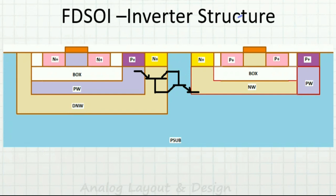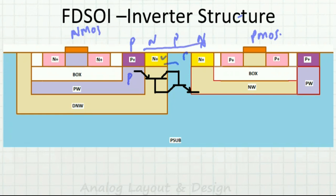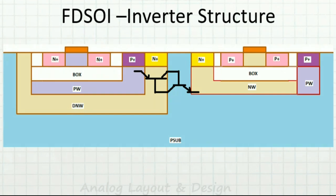Now let's look at the structure of an FDSOI inverter. This is the NMOS and this is the PMOS. There is a P-well (P region), then an N region, then another P region and N region — so a P-N-P-N structure exists. Similar to bulk CMOS, I can identify a PNP transistor and an NPN transistor. The P-well, deep N-well, and P-substrate form the PNP, while the NPN is formed by the deep N-well, substrate, and N-well. This P-N-P-N junction is vulnerable to latch-up.